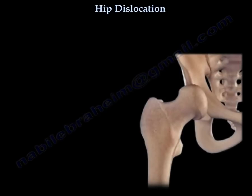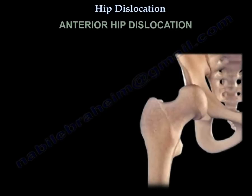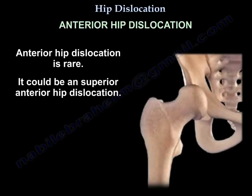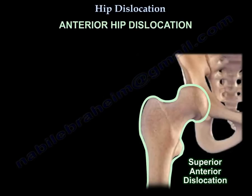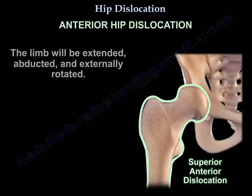In anterior hip dislocation, which is rare, it could be a superior anterior hip dislocation. The limb will be extended, abducted, and externally rotated.